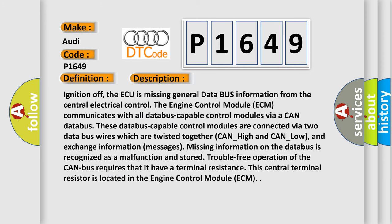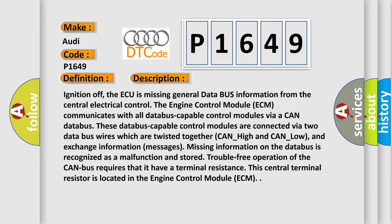Here is a short description of this DTC code. With ignition off, the ABS is missing general data bus information from the central electrical control. The engine control module (ECM) communicates with all data bus capable control modules via a CAN data bus. These control modules are connected via two twisted data bus wires — CAN_high and CAN_low — and exchange information. Missing information on the data bus is recognized as a malfunction. Proper CAN bus operation requires a terminal resistance, which is located in the ECM.